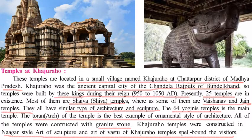The temples at Khajuraho are situated in the Chhatarpur district of Madhya Pradesh. It was the ancient capital of the Chandela Rajputs of Bundelkhand, and the temples were built during their reign from 950 to 1050 AD. Today, almost 25 temples are present — most are Shaiva temples, with some Vaishnava and Jain temples as well. The Chausath Yogini temple is the main attraction. All temples were constructed with granite stones in the Nagara style of architecture.